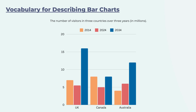The most important thing to do with any data you'll see is to take a look at the title first. The title reads: the number of visitors in three countries over three years in millions — very useful as it gives us the figure in millions. We have a key for three years: 2014, 2024, and 2034. Along the x-axis we have UK, Canada, and Australia, and along the y-axis numbers from zero to 20 million.